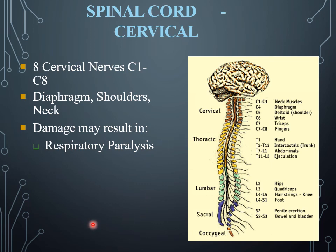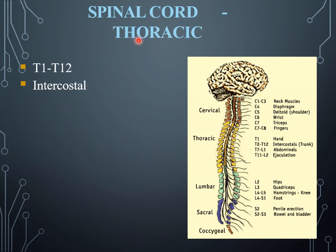The thoracic nerve T1 is present in the hands; T2 to T12 are in the trunk; T7 to L1 are at the abdominal region; and T11 to L2 are involved in ejaculation. For lumbar nerves: L2 is involved in the hip, L3 in the quadriceps, and L4 and L5 in the hamstrings, knee, and foot. Sacral nerves S2 and S3 are involved in penile erection and bowel and bladder movement.